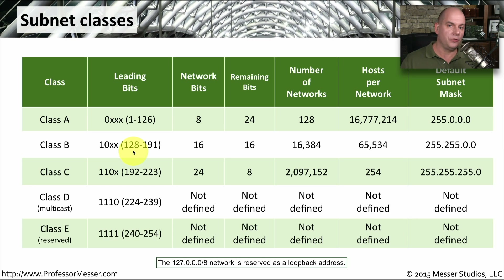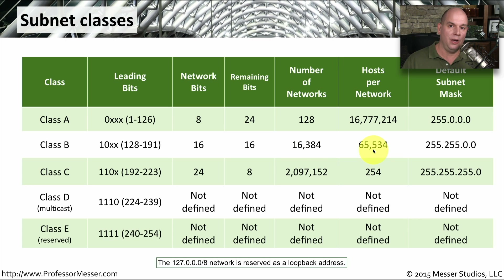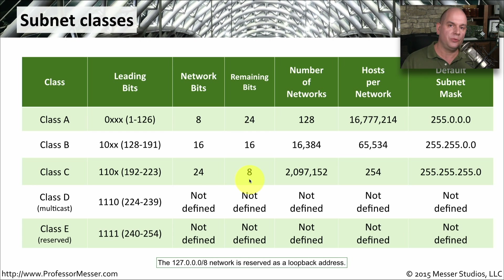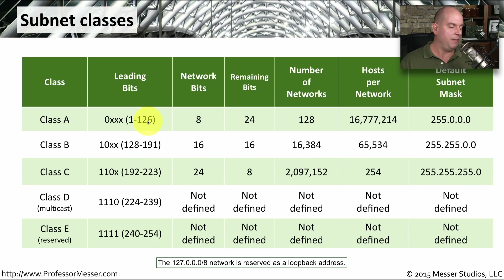Class B gave you 16,000-plus networks and over 65,000 hosts per network. A class C means the IP address starts with 192 through 223, which means there were 24 network bits and eight bits remaining for hosts — giving you over 2 million networks and 254 hosts per network, with a default mask of 255.255.255.0. You'll notice we skipped 127 — we went from 126 to 128 — because the 127 network is reserved as a loopback address in IPv4 and is not associated with any particular class.